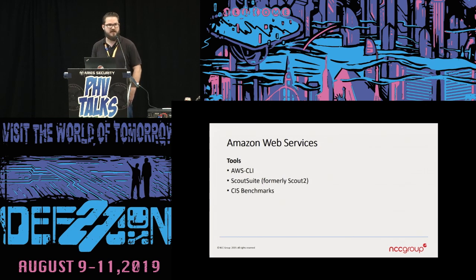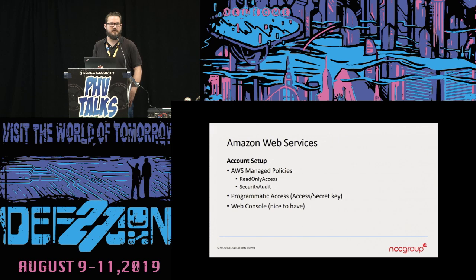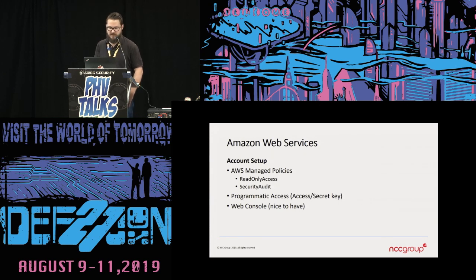The tooling we are going to use is AWS CLI, developed by Amazon for querying AWS and interacting with the API. Another tool is Scout Suite, which we developed for automated collection of data on AWS. And then CIS benchmarks, a third-party best practice reference. When assessing an AWS environment, we want to set up our auditing account and apply a couple of managed policies: read-only access and security audit. We also want to establish programmatic access for the API via an access key and secret key pair.